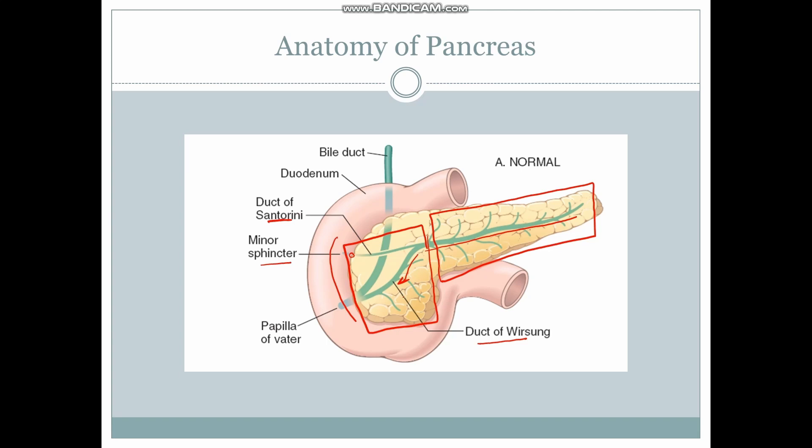The duct of Wirsung drains the head, body, and tail of the pancreas through its combination with the main pancreatic duct. It drains into the second part of the duodenum through the ampulla of Vater, which has a large caliber, so it drains the major portion of the pancreas. The bile duct also joins at this junction, and the sphincter muscles here are called the sphincter of Oddi.